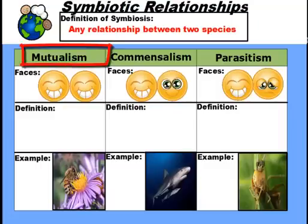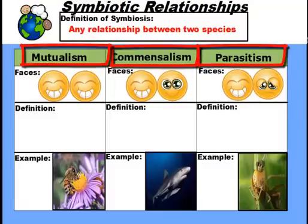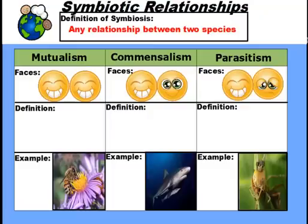First we have mutualism, next we have commensalism, and then lastly we have parasitism. Now each one of these relationships has a different dynamic to it where parties benefit and don't benefit and so forth. So let's take a closer look at them.